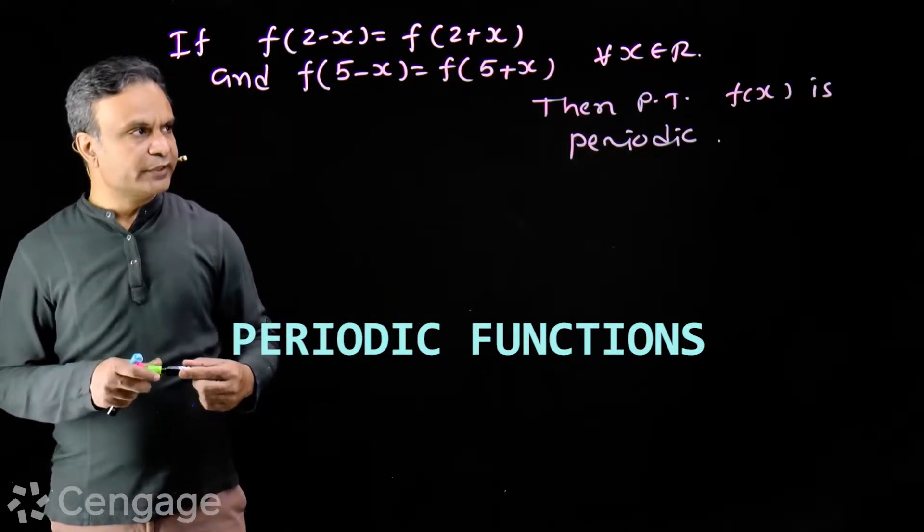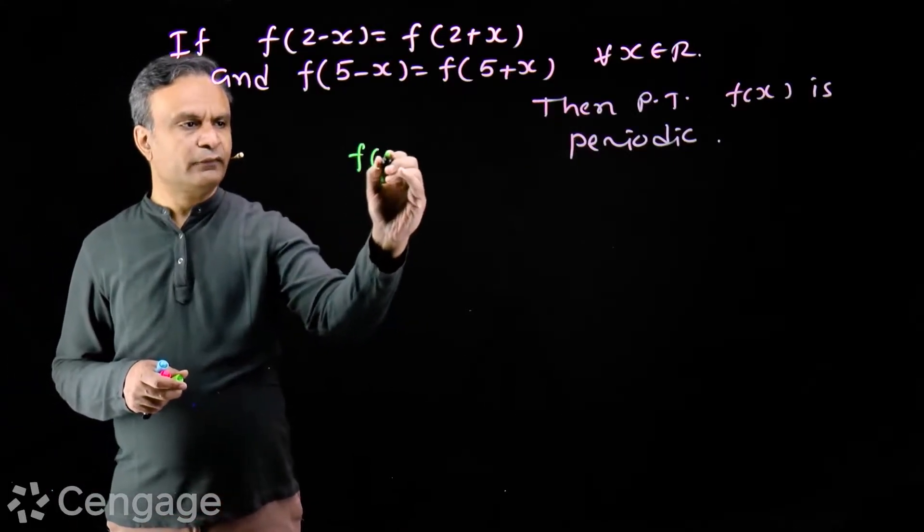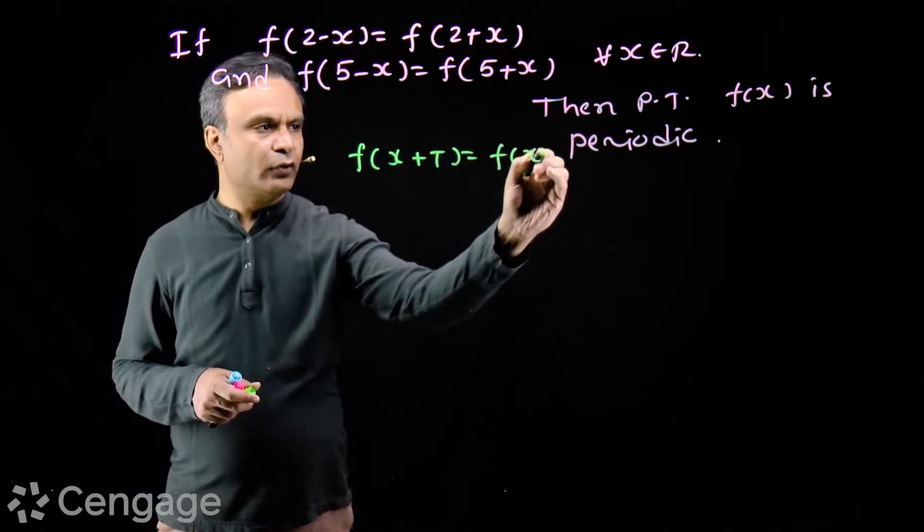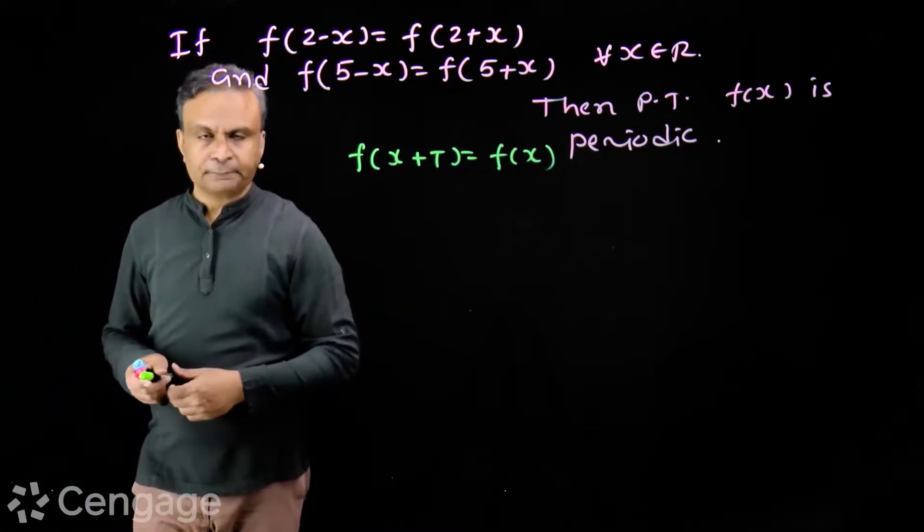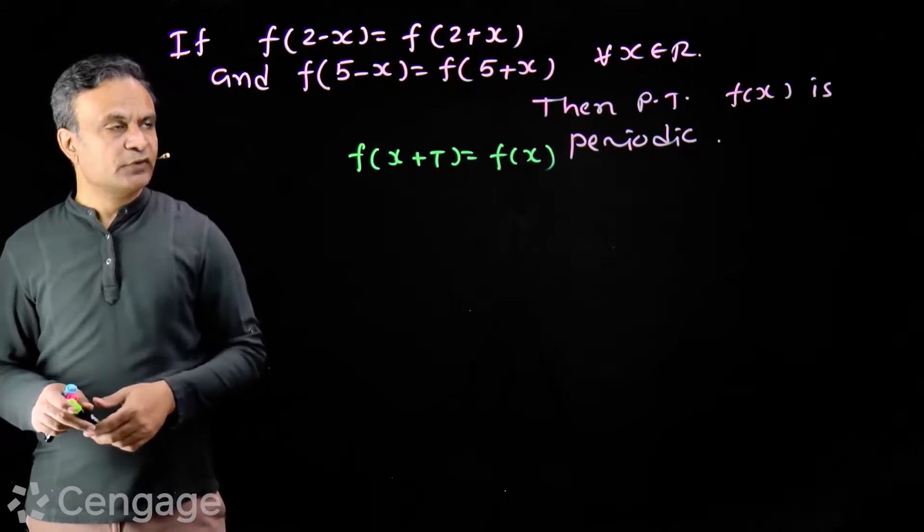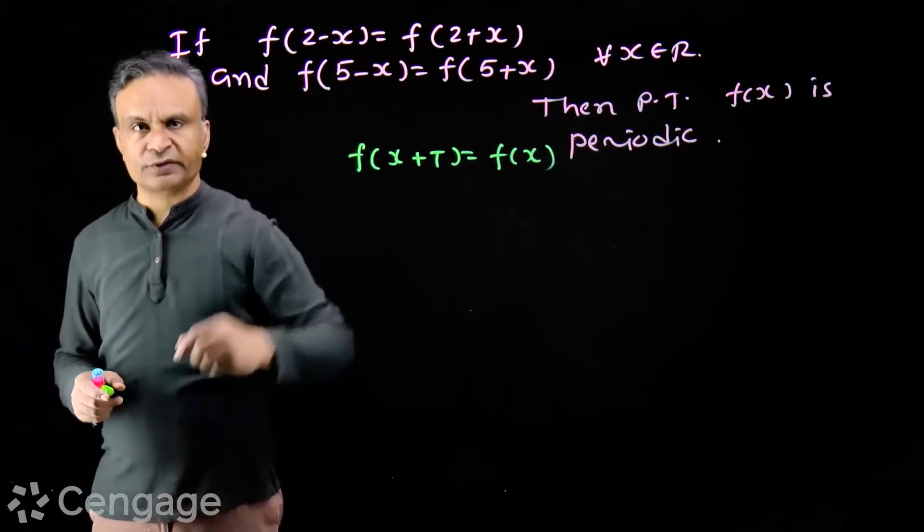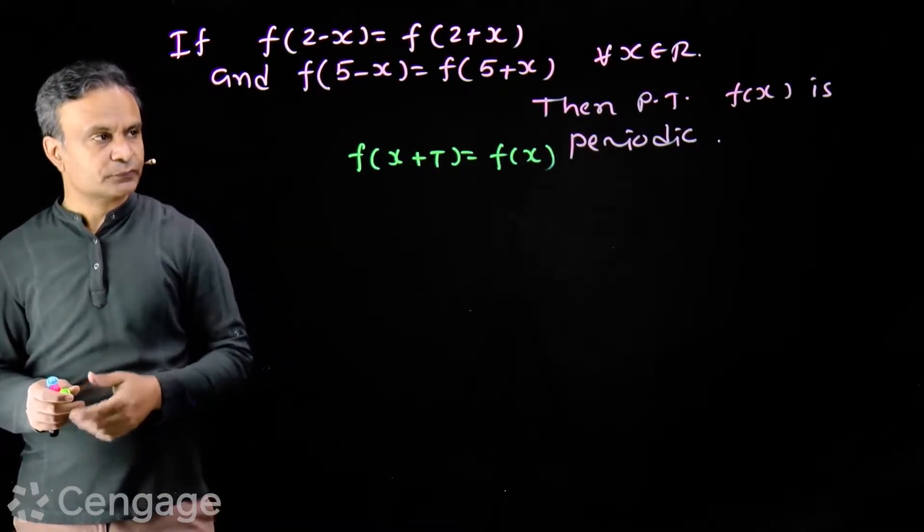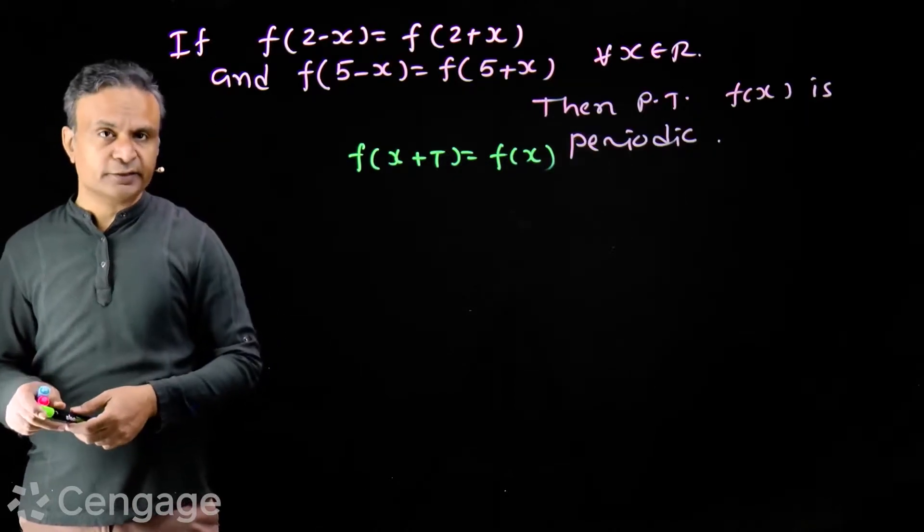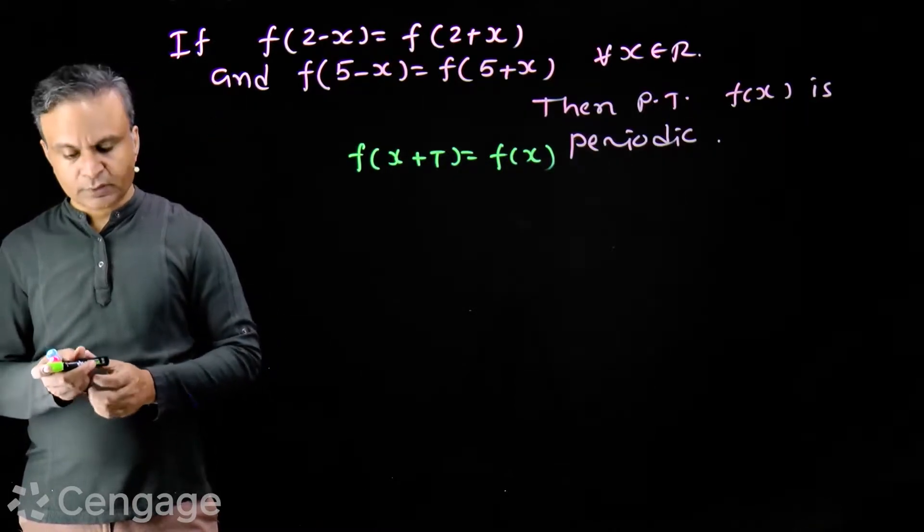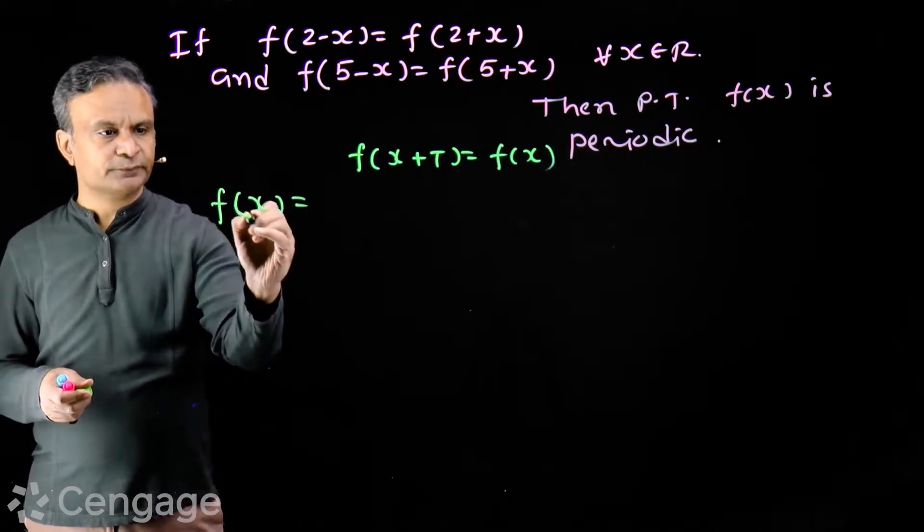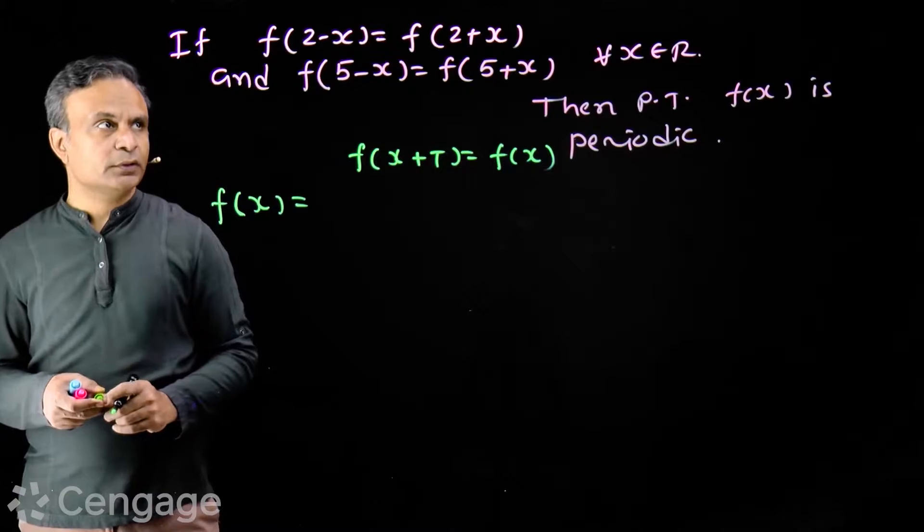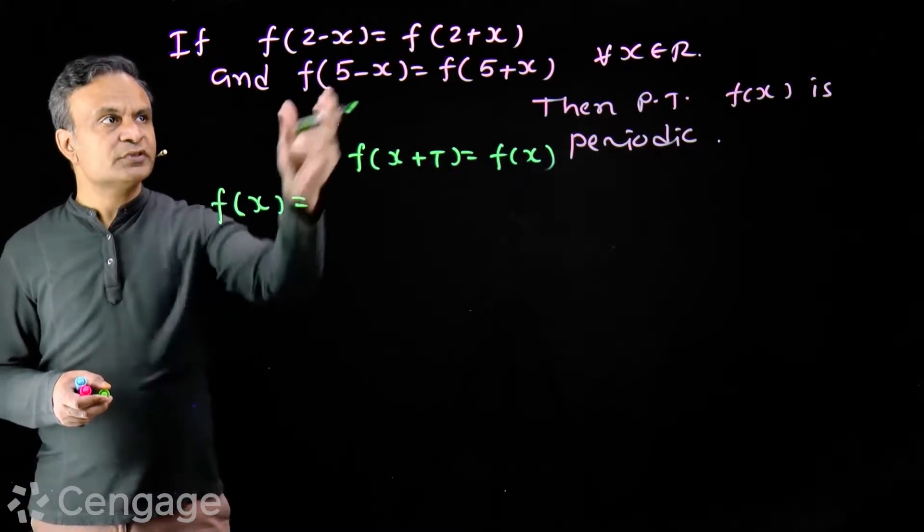We have to prove that f(x+t) = f(x). How do we start? Function f(x) satisfies these two equations, these two relations. Now to use this relation, we add and subtract 2.